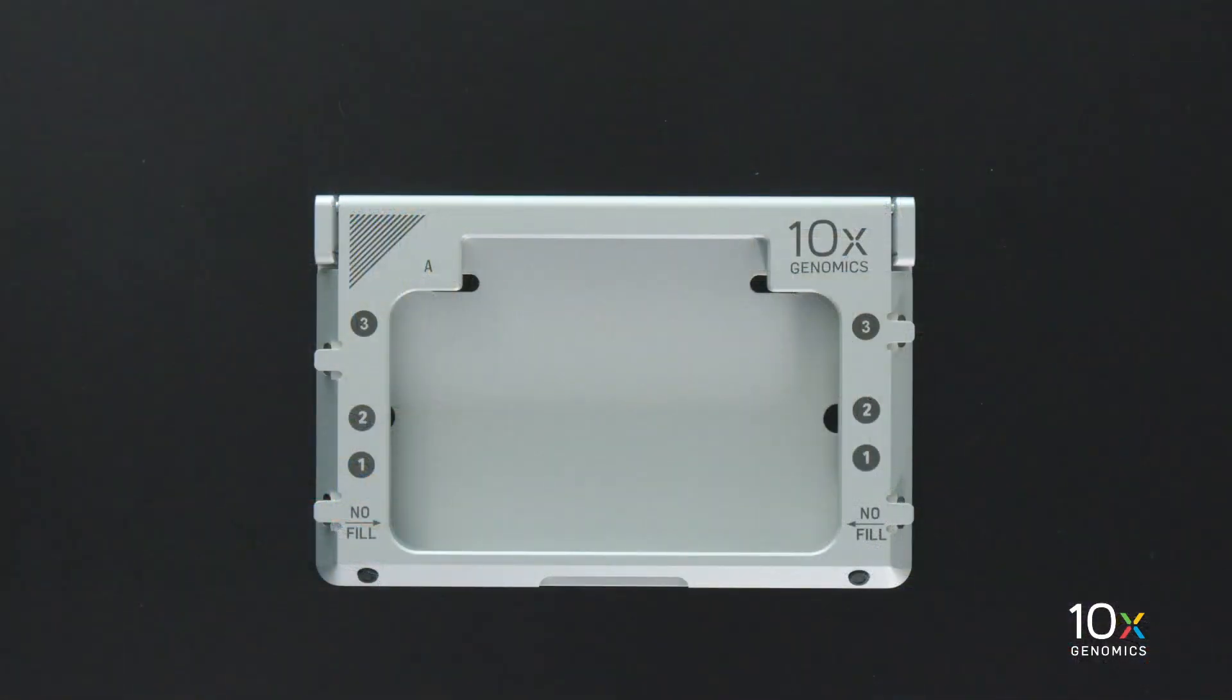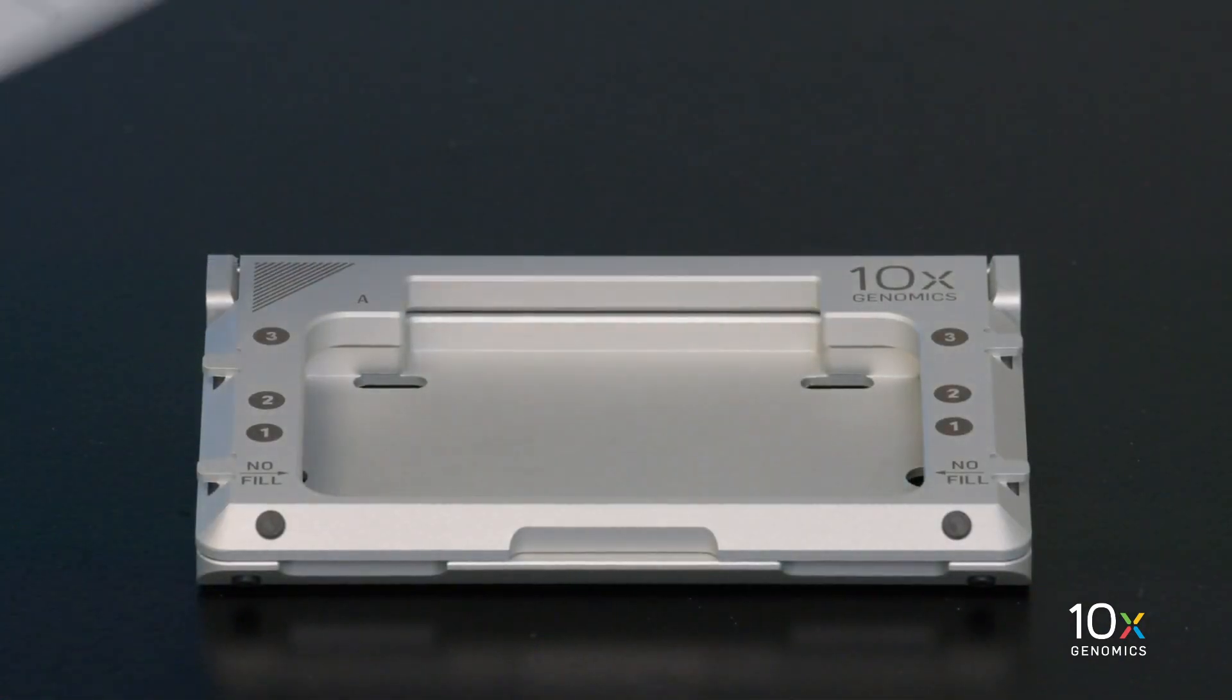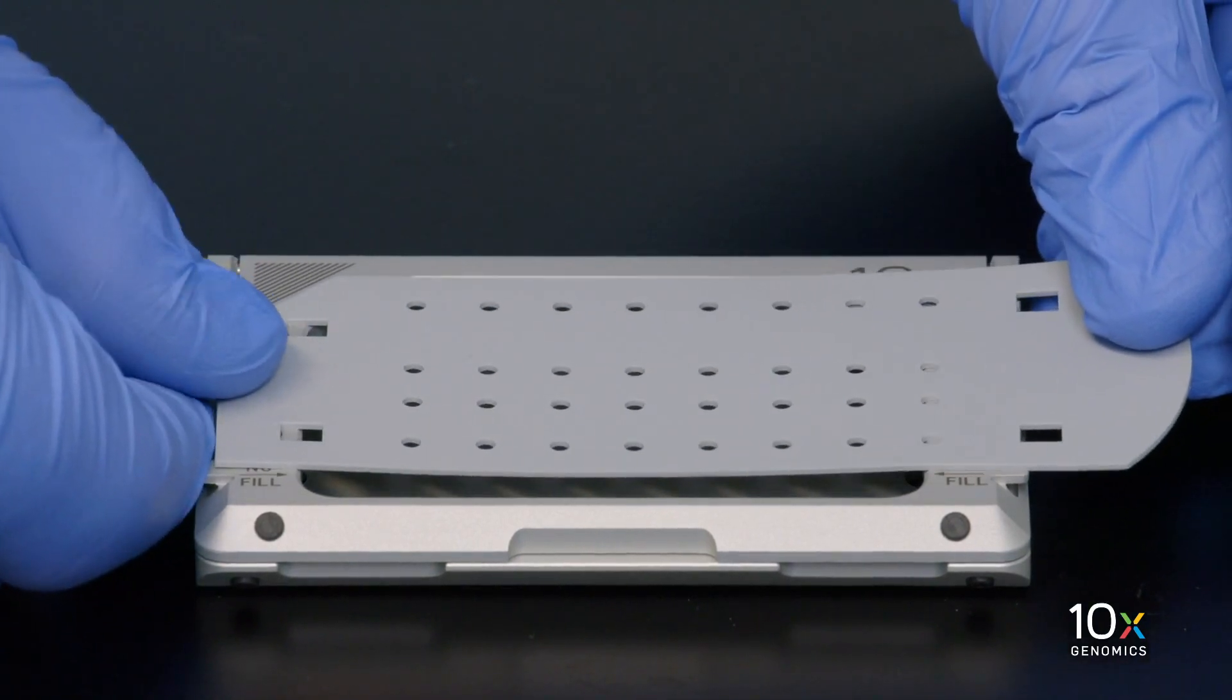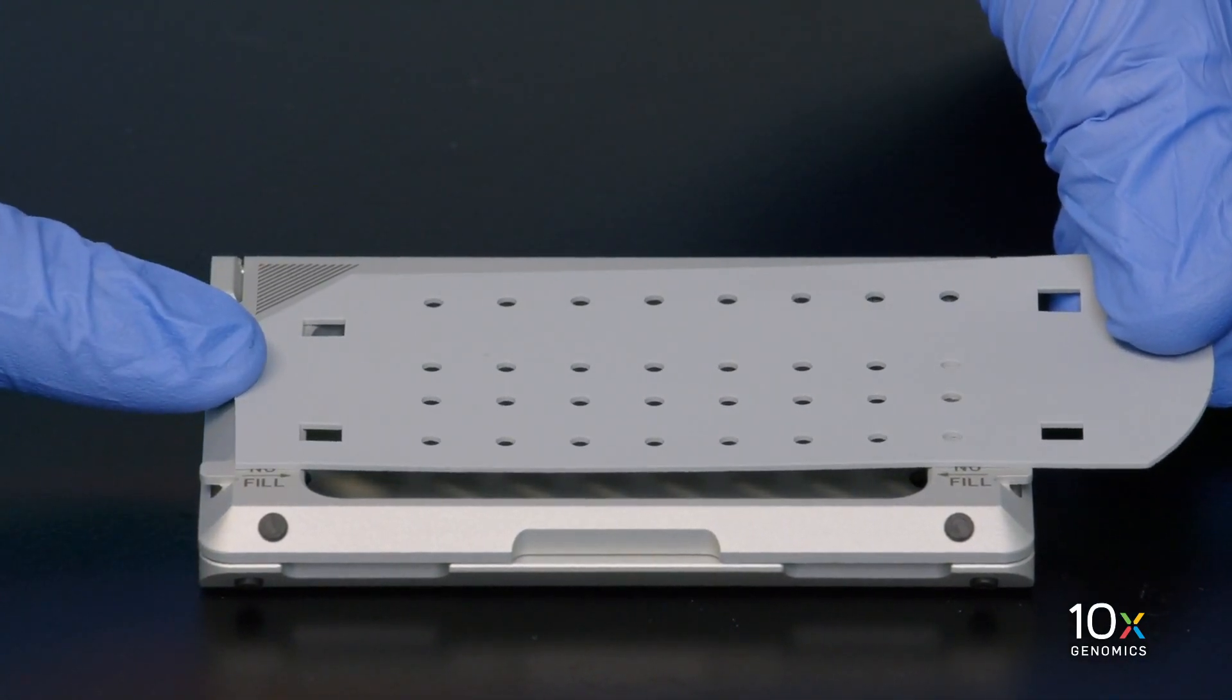Ensure the secondary holder is closed before attaching the gasket. The gasket attaches in only one orientation, with the notch on the upper left-hand corner.